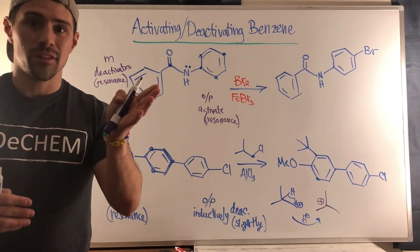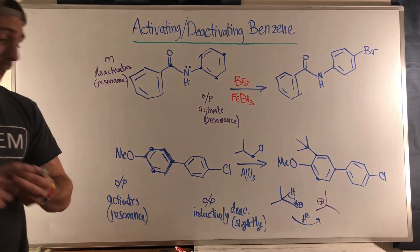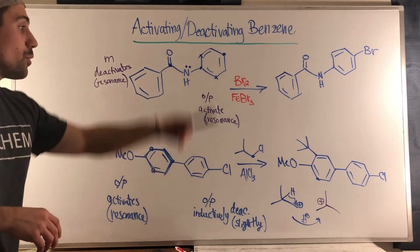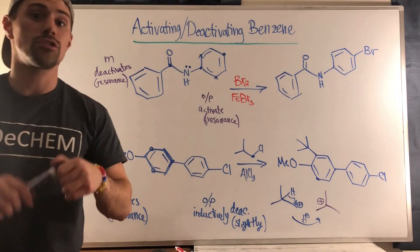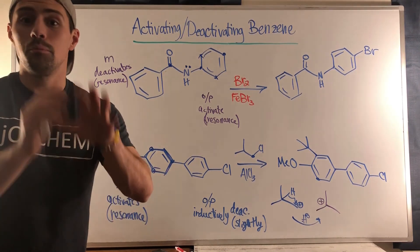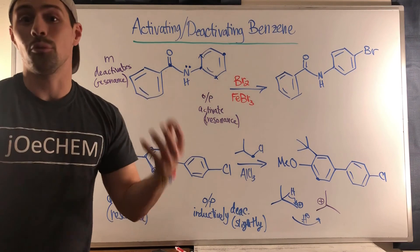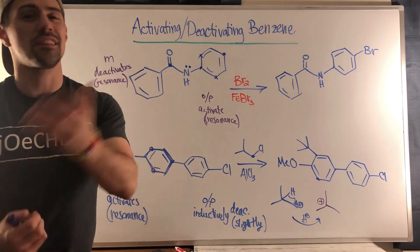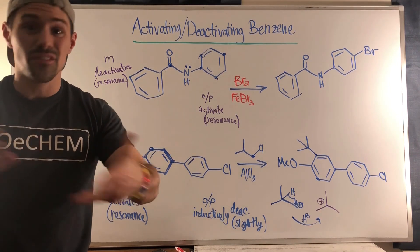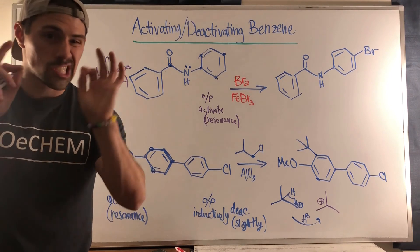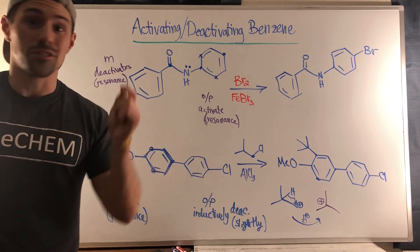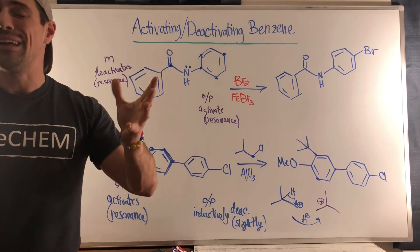I have problems that specifically exploit this on the worksheet, so make sure you hammer those. This isn't the most difficult concept, so don't let all your hard work learning EAS reactions go to waste by forgetting that halogens slightly deactivate via the inductive effect, and alkyl groups slightly activate via hyperconjugation. All your other resonance knowledge is valid. Thank you for watching — I'm so stoked you're using Jochem, and I hope to see you all in the next video.